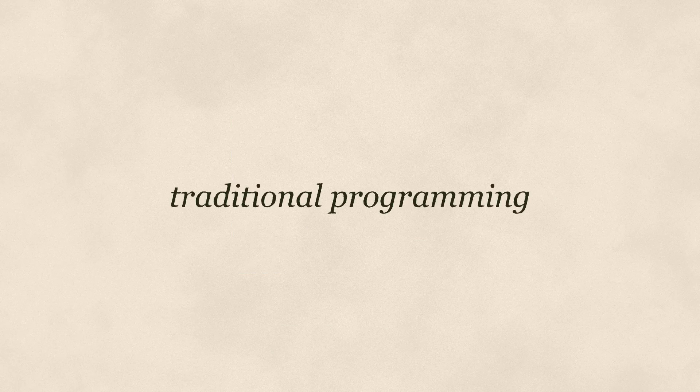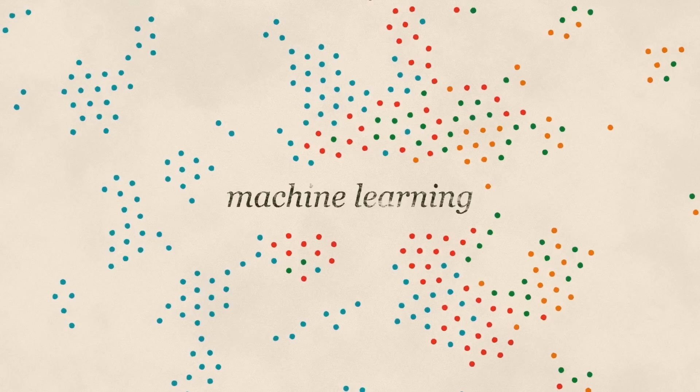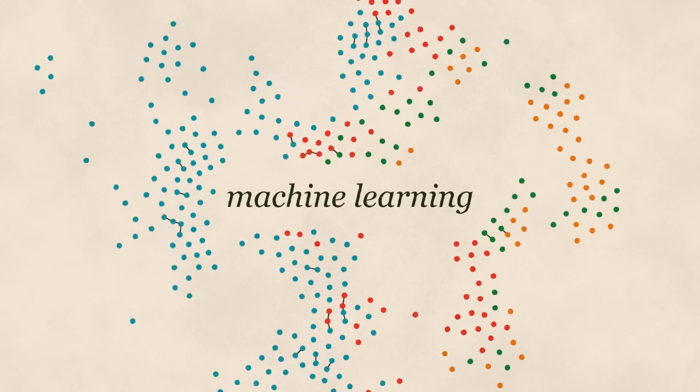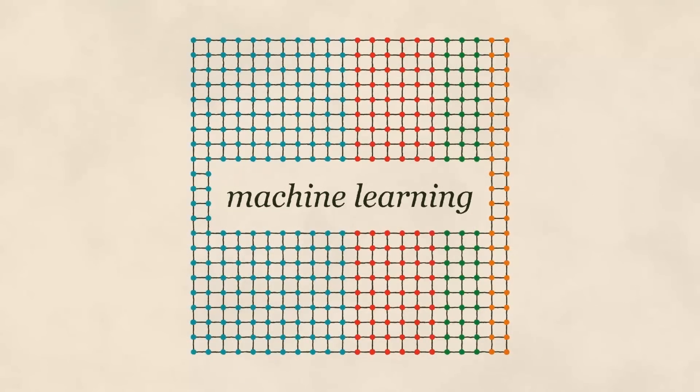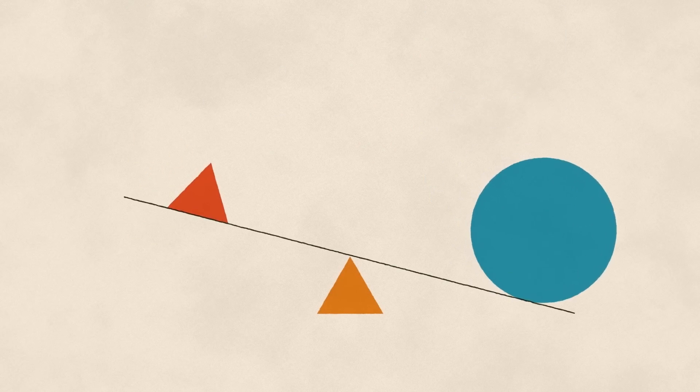With traditional programming, people hand-code the solution to a problem, step by step. With machine learning, computers learn the solution by finding patterns in data. So it's easy to think there's no human bias in that. But just because something is based on data doesn't automatically make it neutral.